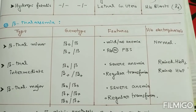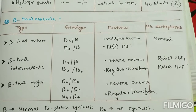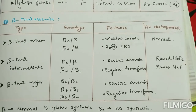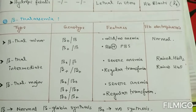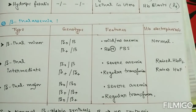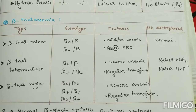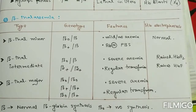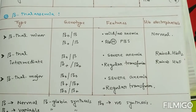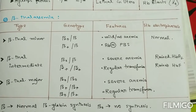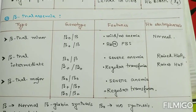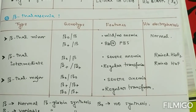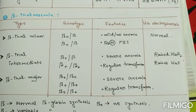Beta thalassemia intermediate has a genotype of either beta-zero/beta-plus or beta-plus/beta-plus. Severe anemia is present and regular transfusion may be required. Hemoglobin electrophoresis shows raised HbA2 or raised HbF.